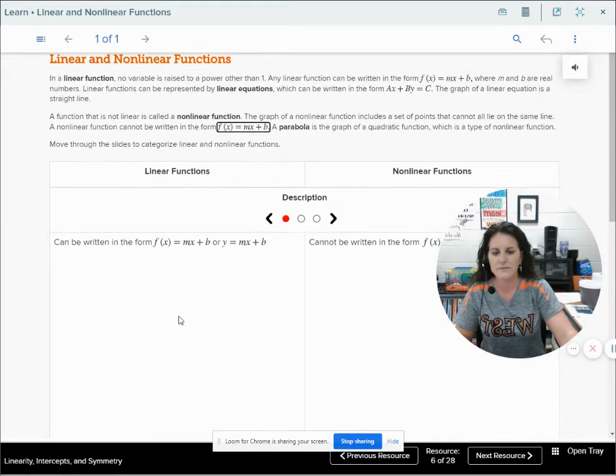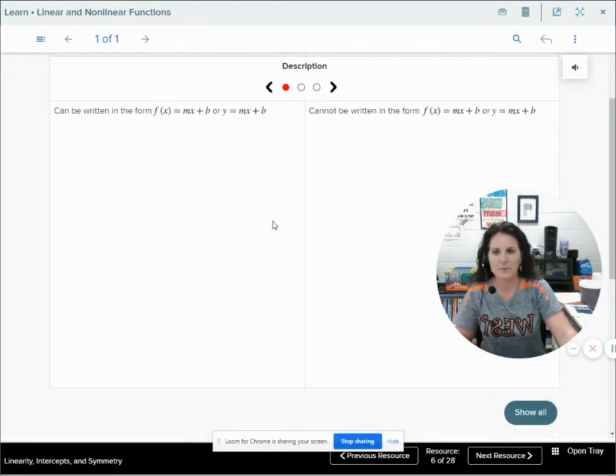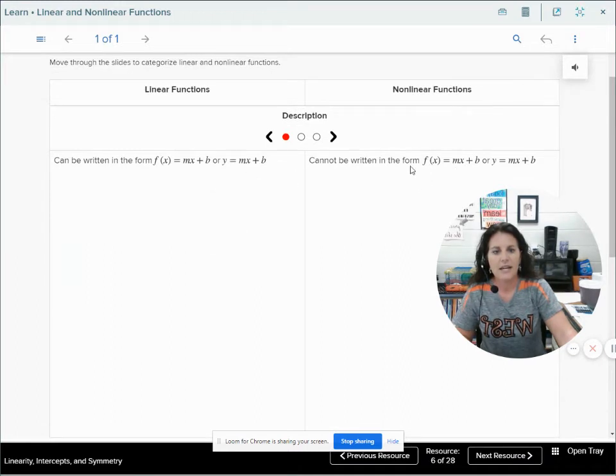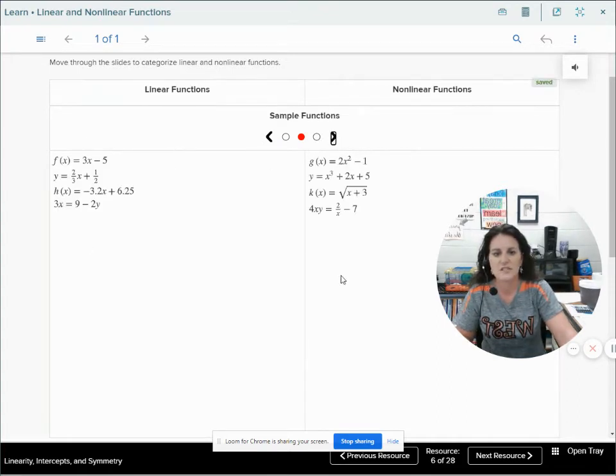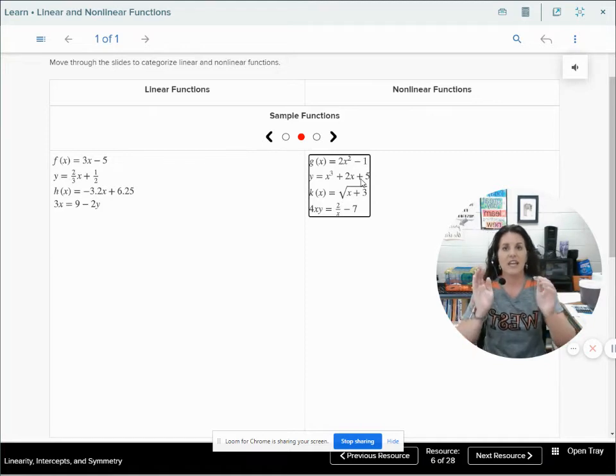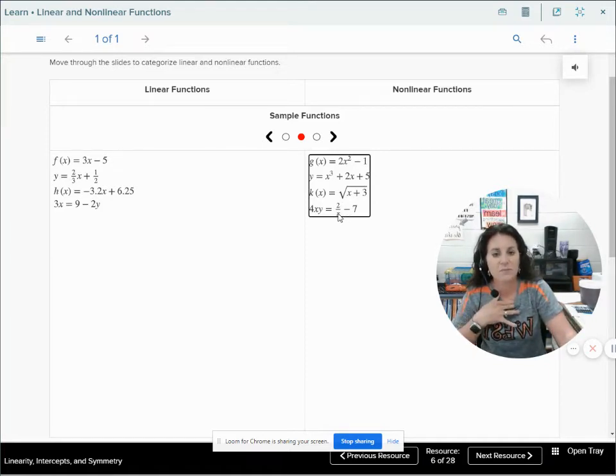A nonlinear function includes points that don't lie on a straight line. Maybe they lie on a curve, but they don't lie on a straight line. A nonlinear function cannot be written in the form f(x) equals mx plus b, because if it's written in that form, it's linear. A parabola, that's that u-shaped graph, is the graph of a quadratic function, and it is a type of nonlinear function. So we've got linear written in the form y equals mx plus b, and if it's nonlinear, it cannot be written in that form.